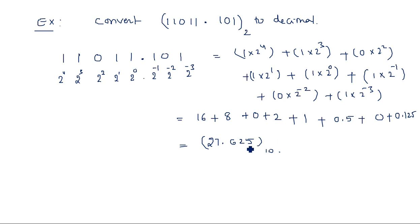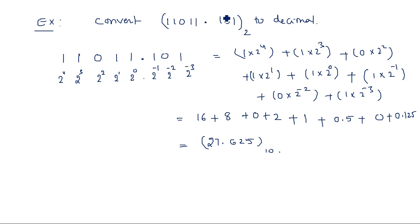So in this way we can convert a given binary number into its corresponding decimal number. If the number is in binary, write it in expanded form with weights 2 power 0, 2 power 1, and so on, multiplied by each digit. Whichever number format needs to be converted into decimal, take its radix as the base — since it is binary, use base 2.